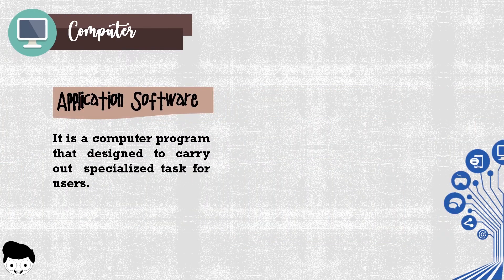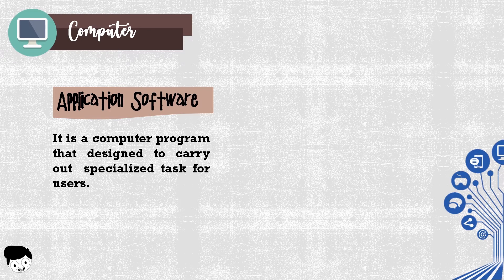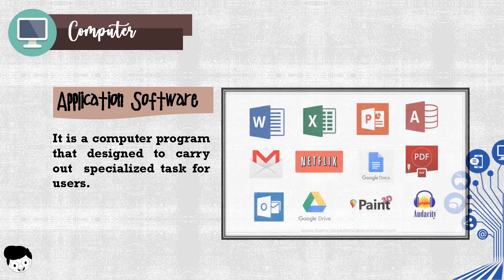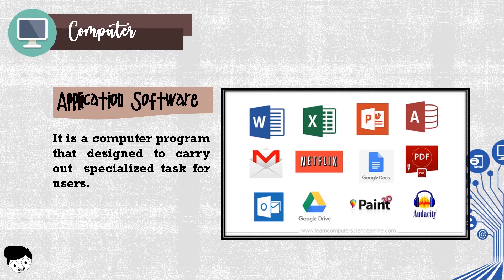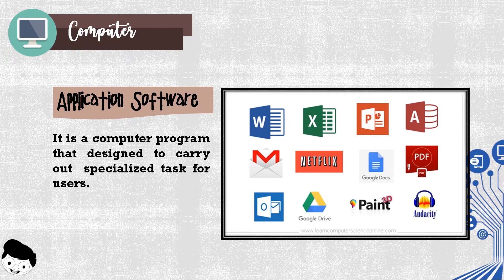Application software is a computer program that's designed to carry out specialized tasks for users. Web browsers, email programs, word processors, games, and utilities are all applications. The word application is used because each program has a specific application for the user.